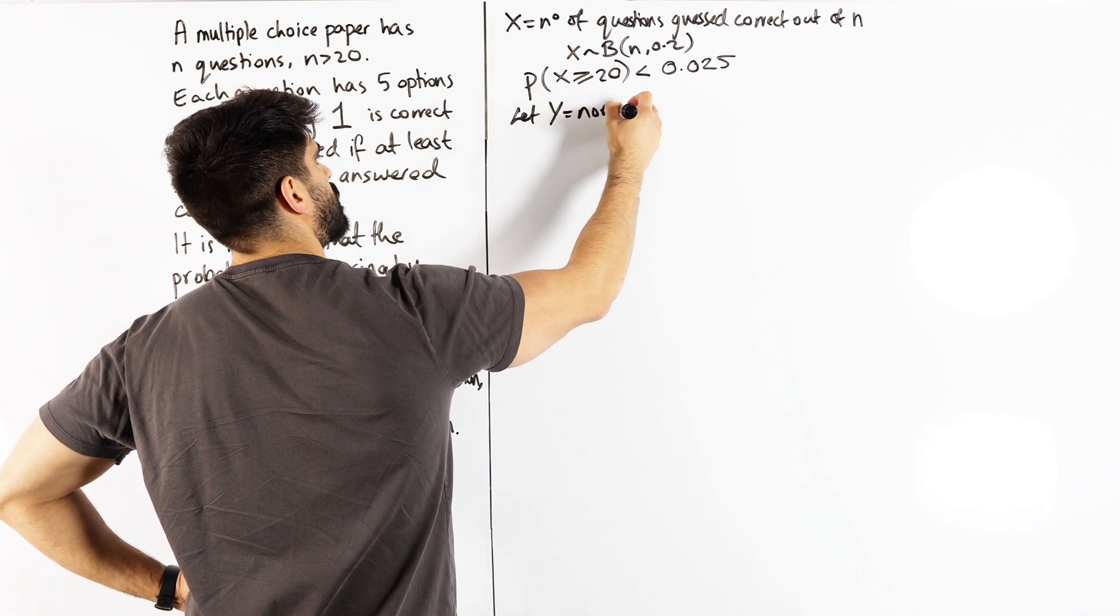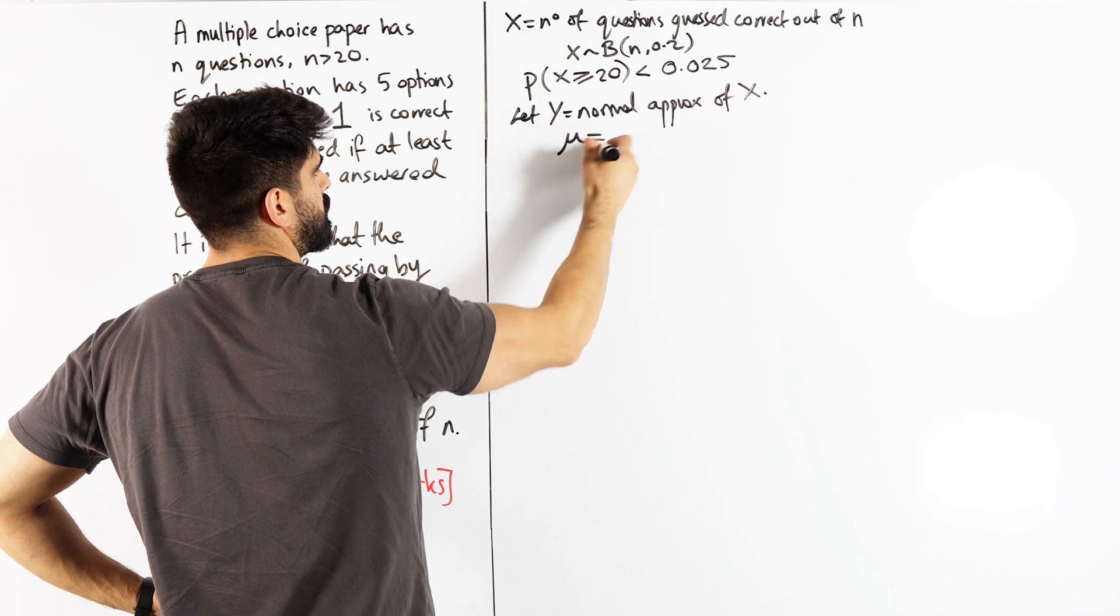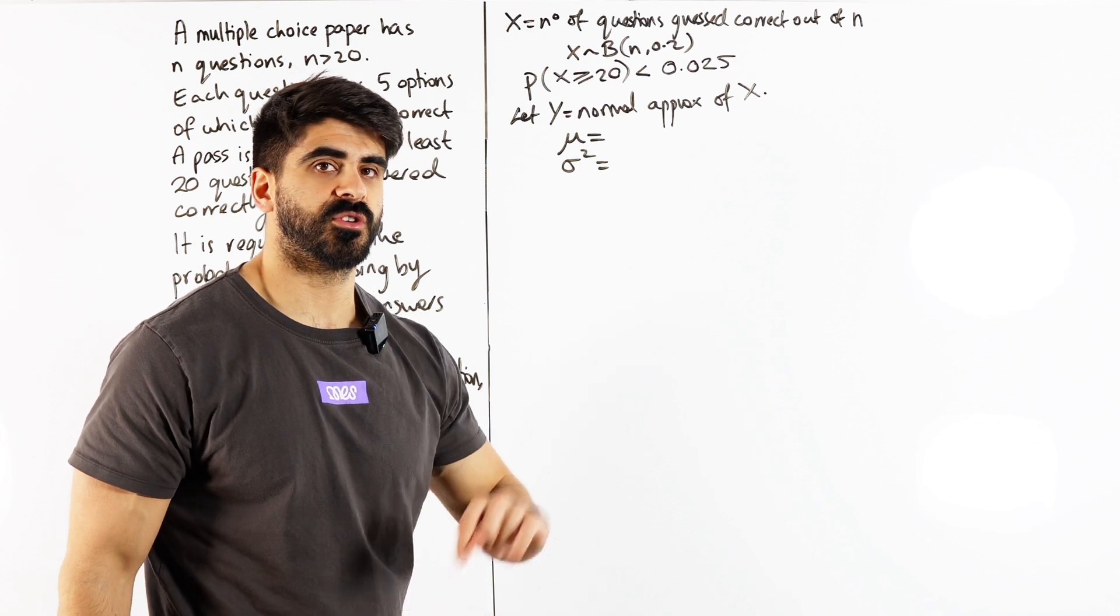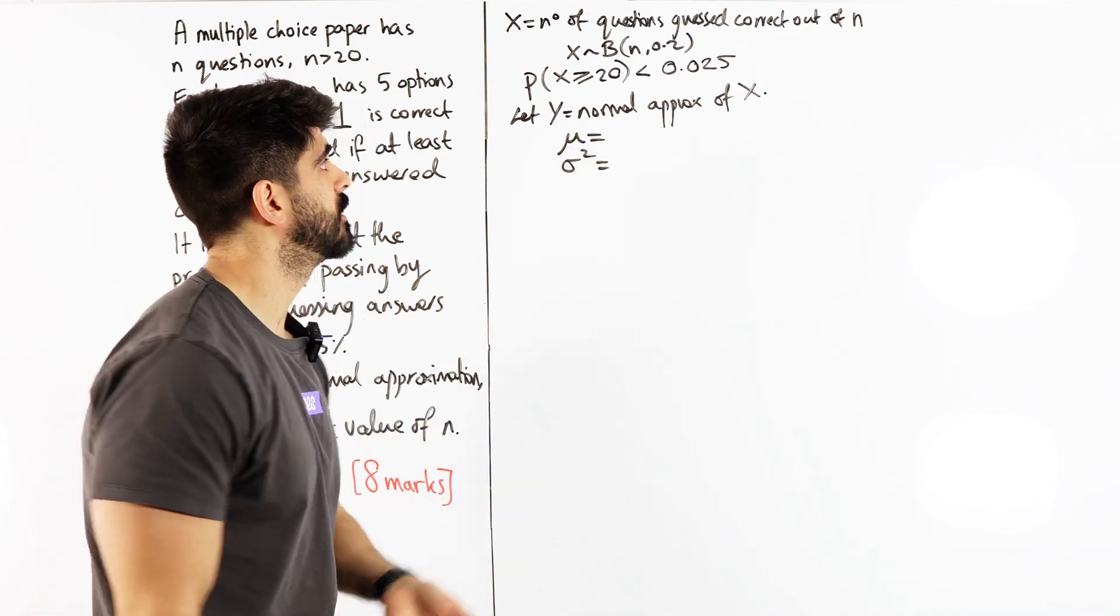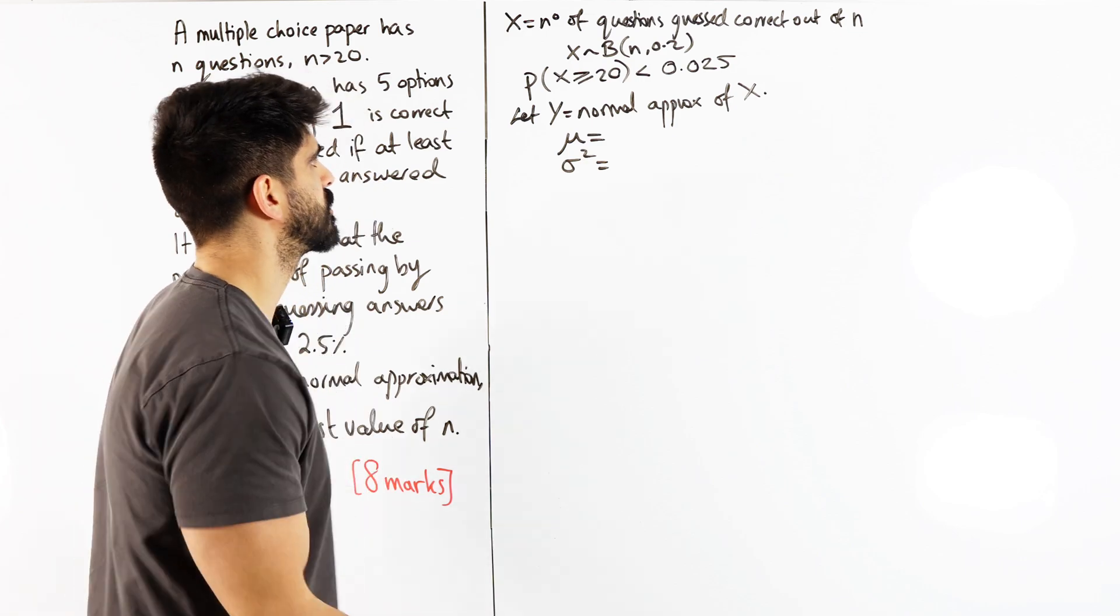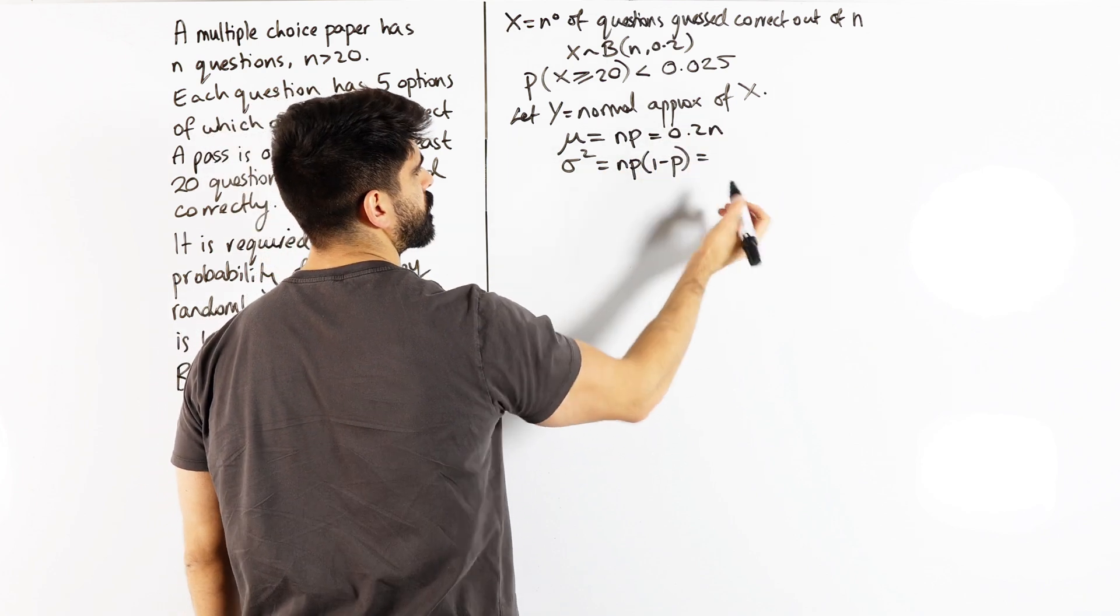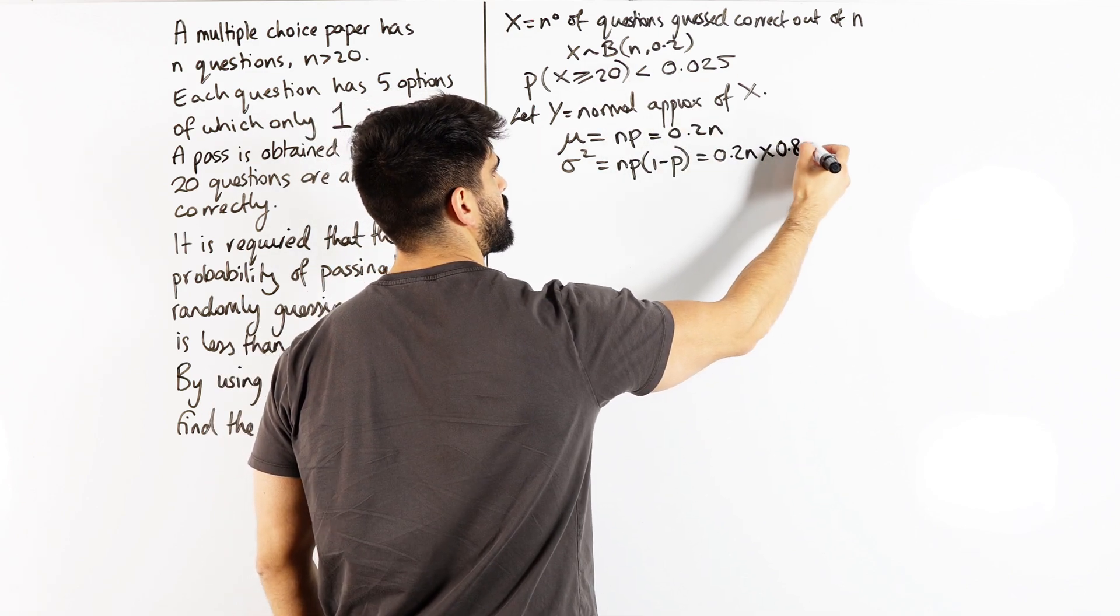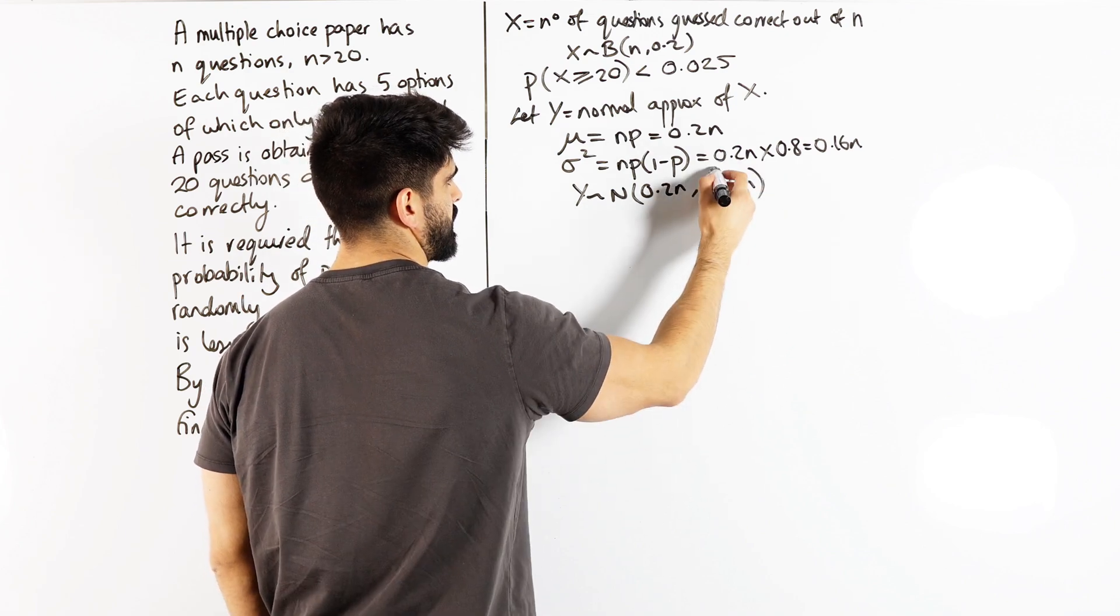So we're going to let y equal the normal approximation of x. Now to move on to the normal approximation, we need to know what mu and sigma squared is. How do you work out the mean or the expected value? Well if I give you an example of say there was 10 questions and the probability of getting a question correct is 0.2, you would say okay then you must get about two questions correct then. You just do 10 times 0.2. It's a GCSE concept. Expected value is your trials times the probability of success. So NP is 0.2N. Sigma squared is NP 1 minus P. So this you don't prove at A-level, it's something we prove in further maths. So NP is 0.2N times 1 minus P, 1 minus that is 0.8. So 0.16N. So Y is normally distributed 0.2N, 0.16N, be careful that's sigma squared.